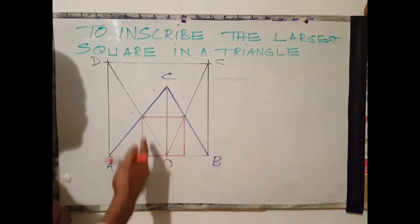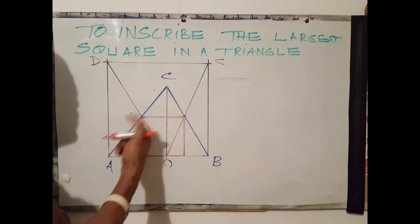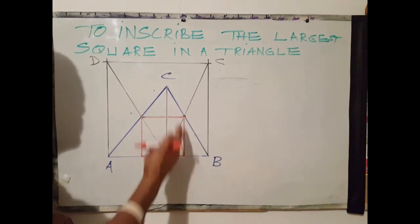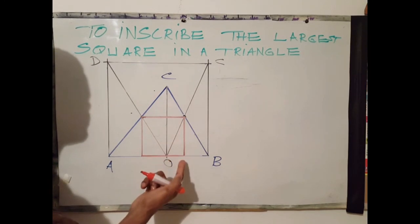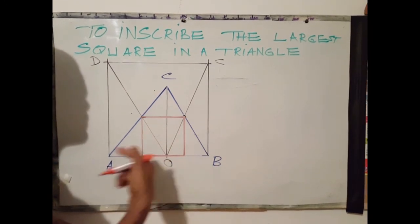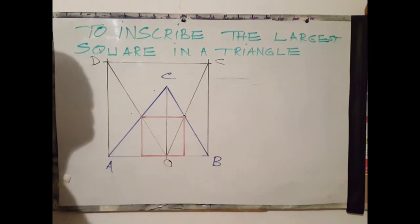And that is how we draw the largest possible square in a triangle, wherein one side of the square lies on the base of the triangle.